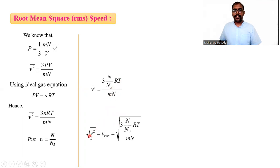If you take the square root of both sides, square root of v-square-bar, which is nothing but v-RMS, equals the square root of this.